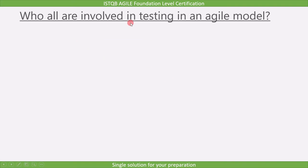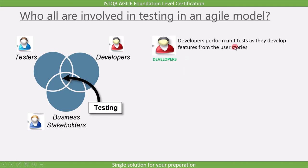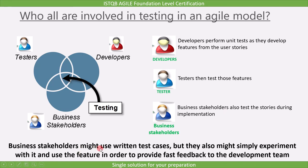Now we should know who is involved in testing in an agile model. Testers, developers, and business stakeholders all have a role in testing, as with traditional life cycles. Developers perform unit tests as they develop features from the user stories. Testers then test those features. Business stakeholders also test the stories during implementation — they might use written test cases, or simply experiment with and use the feature in order to provide fast feedback to the development team.